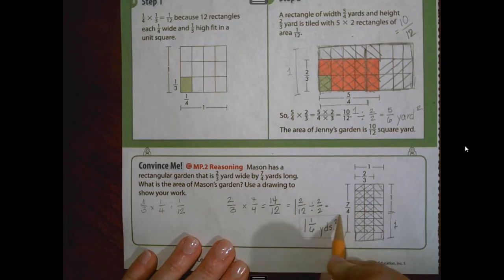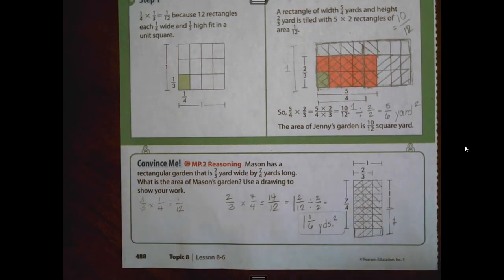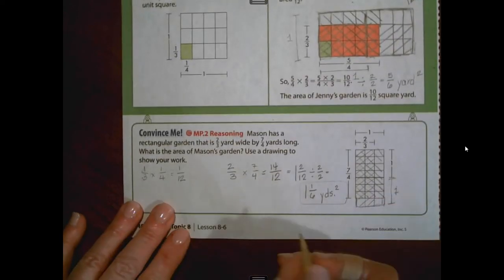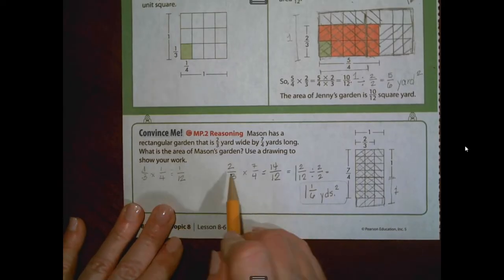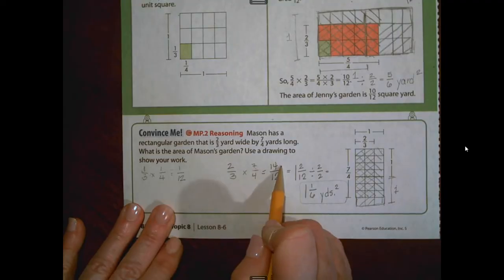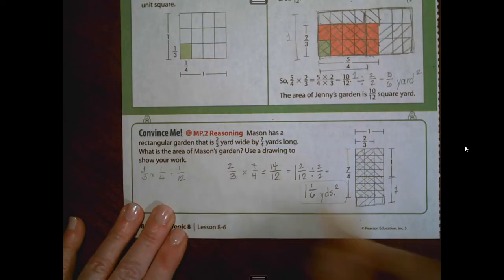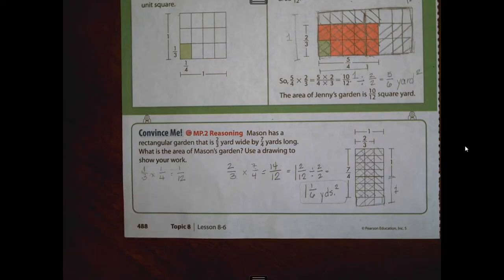Some of you are probably already going, do I really have to draw all these models? And the answer is no. You have to understand how the models work to understand how the actual algorithm works. So let's go back to this. You already know from our prior lessons that you can multiply numerator times numerator to get the numerator in your product. Denominator times denominator gets your product. So without that model, you could have gotten that answer. So when we work through today, we're going to actually be moving away from the models and using the standard algorithm.